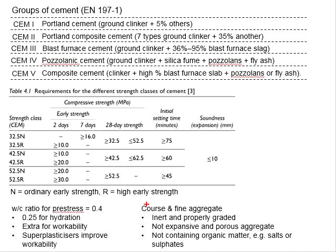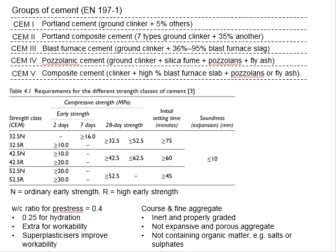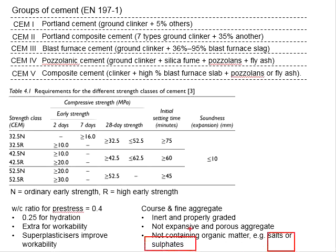The aggregate must not be expansive or porous, as this will affect the quality of the concrete. It should also not contain organic content such as salt and sulfate, as this will affect the durability of the concrete.